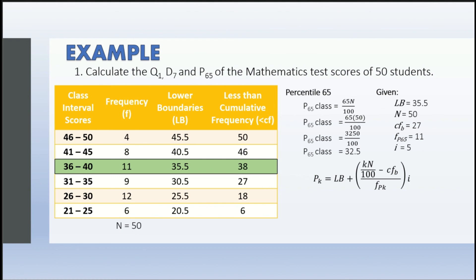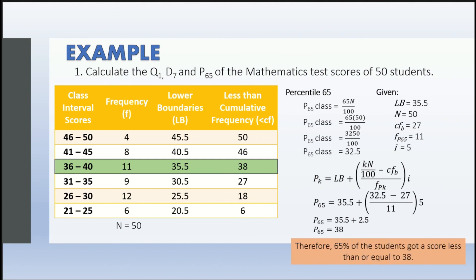Using the formula P sub k = lb + [(kn/100 − cf sub b) / f sub Pk] × i, we have lb = 35.5, kn/100 = 32.5, cf sub b = 27, and f = 11. So: 35.5 + [(32.5 − 27) / 11] × 5 = 35.5 + 2.5 = 38. Therefore, 65% of the students get a score less than or equal to 38.